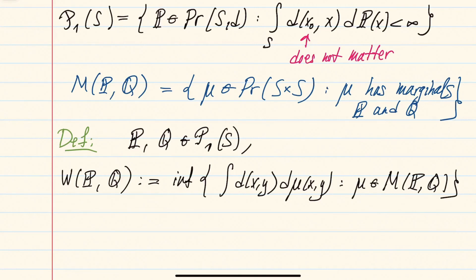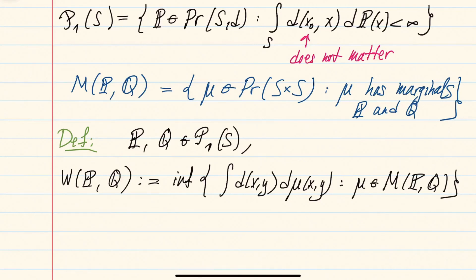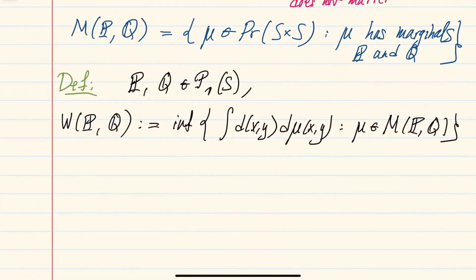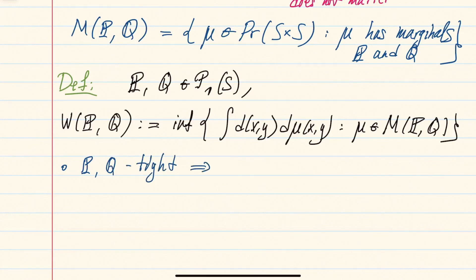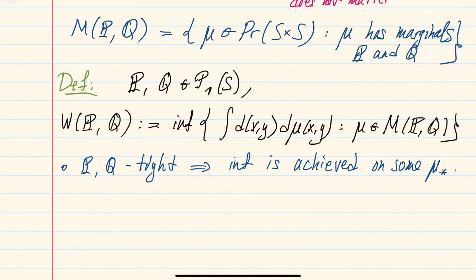So that's the definition of the Wasserstein distance between P and Q. Let's start with some general comments about this quantity. First of all, it's easy to show — and this will be left as an exercise — that if P and Q are tight, then this infimum is achieved. So you can take some measure mu* with marginals P and Q such that W equals this integral with respect to mu*.